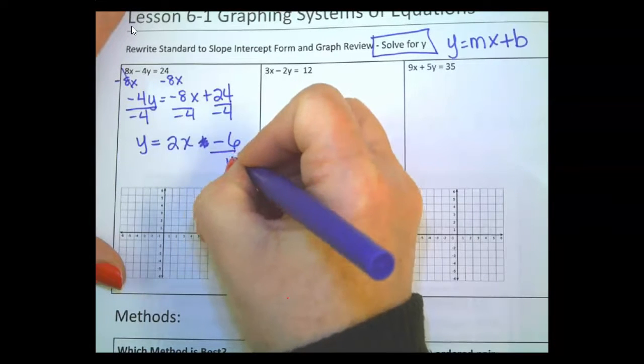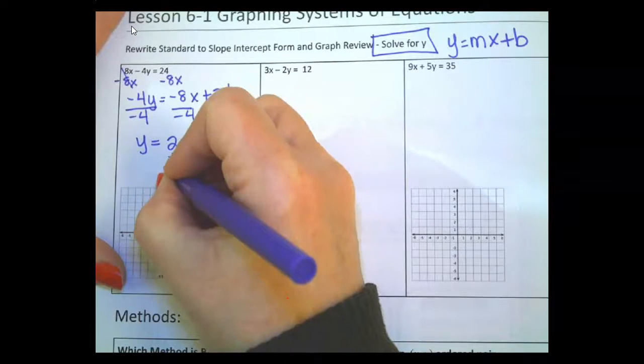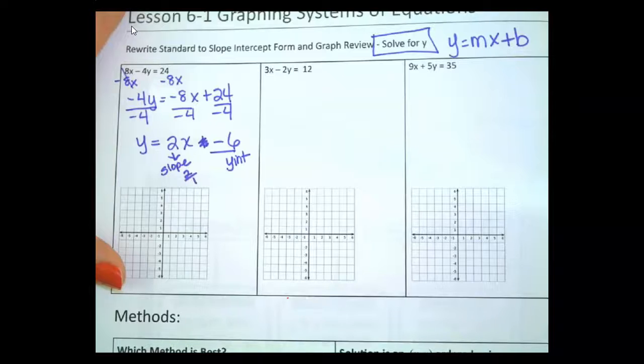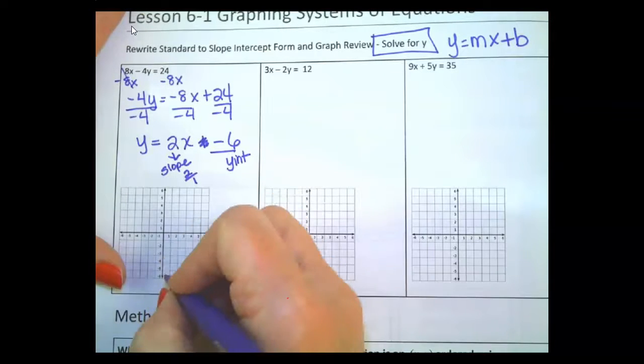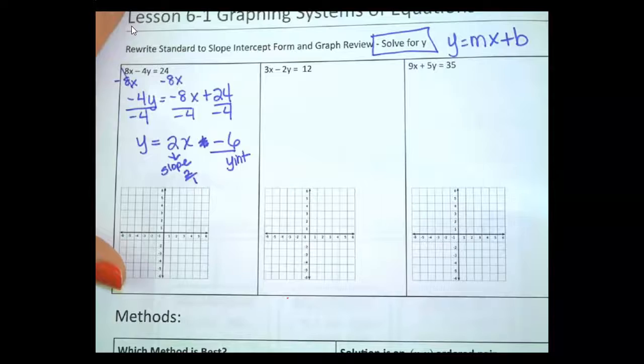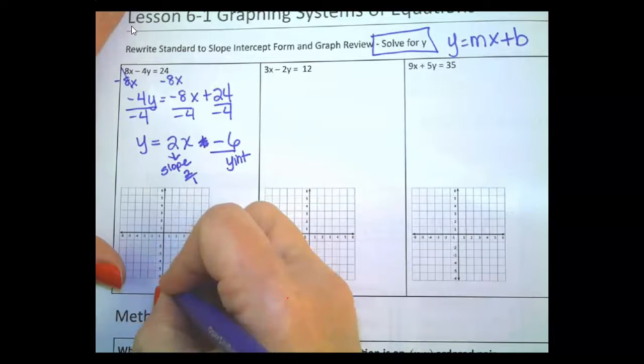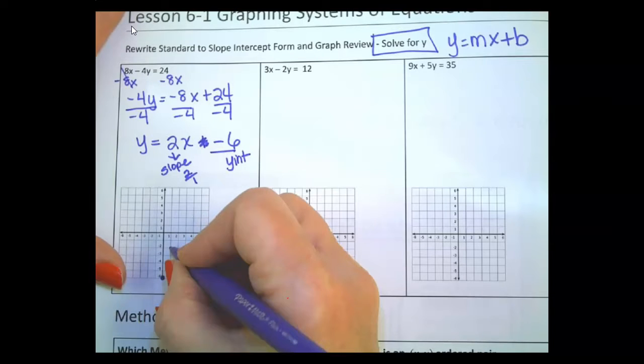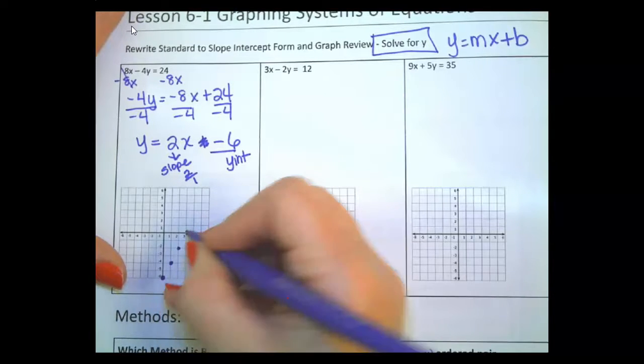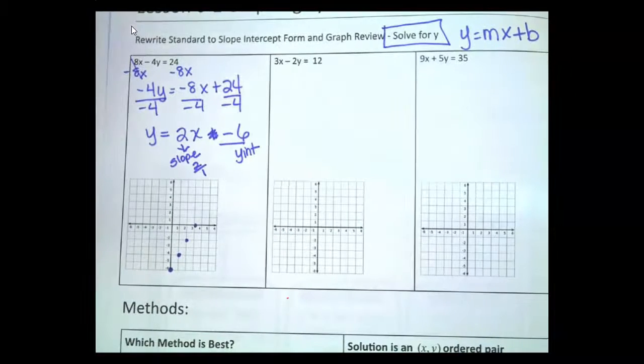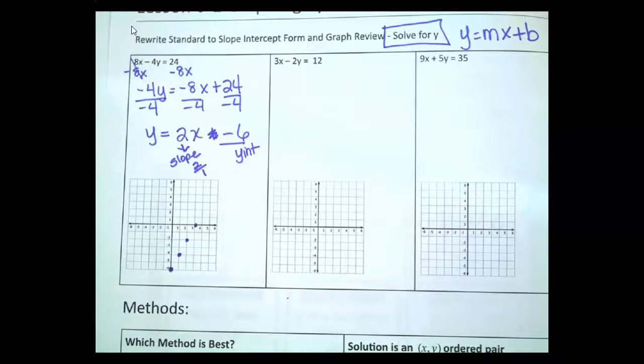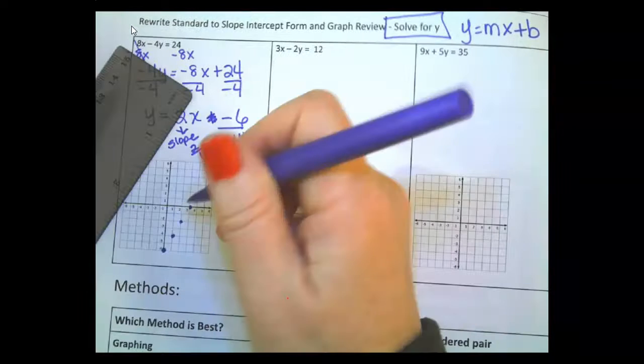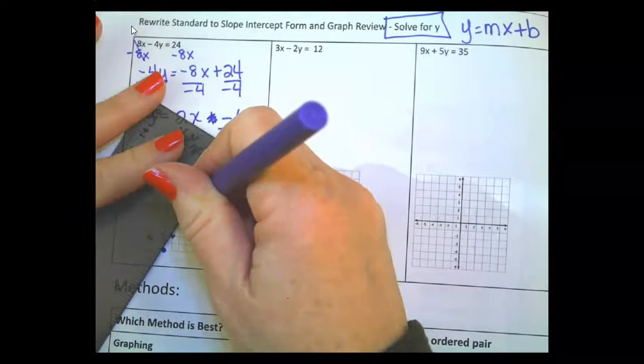Okay. Y intercept. Slope. We write slope as a fraction. If it's not in a fraction we put it over 1. We need a rise and a run. So I'm going to start at a negative 6 which is down here. And then it says to go up 2 over 1. Up 2 over 1. Up 2 over 1. I can keep going or get a straight edge because it's going to be important that we graph these with a straight edge.